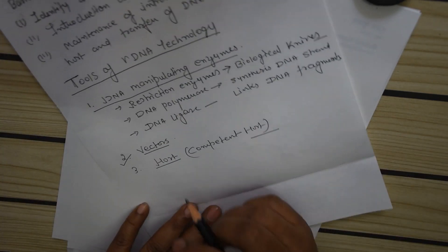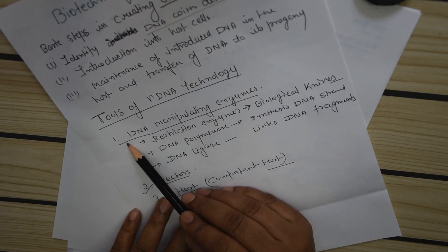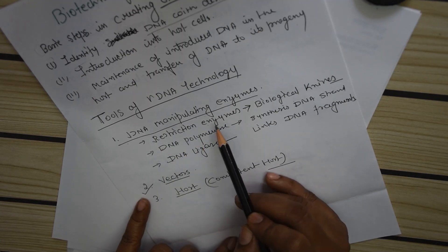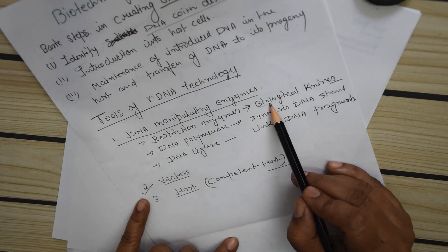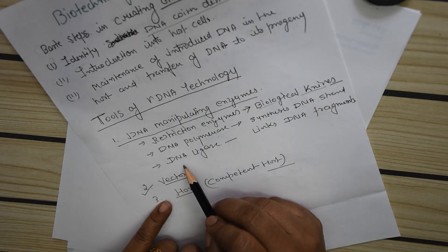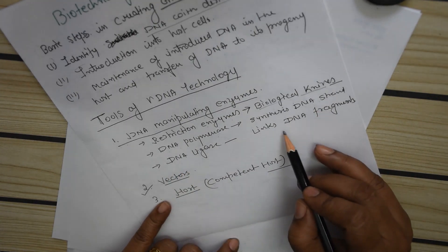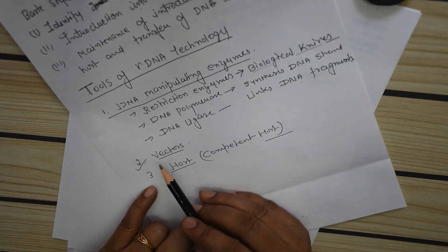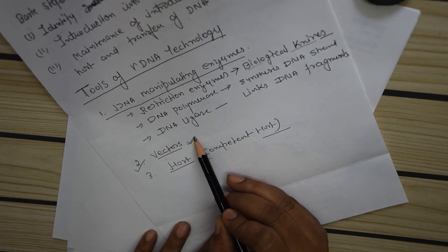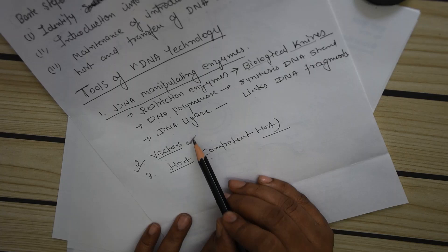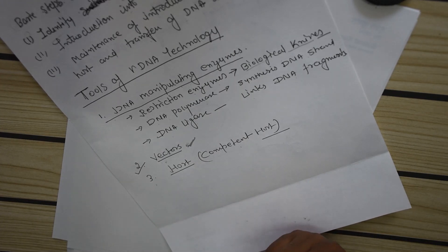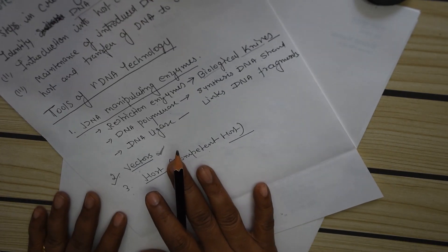For recombinant DNA technology there are certain tools. The first tool is DNA manipulating enzymes. The first one is restriction enzyme, also referred to as biological knives. DNA polymerase helps in the synthesis of a DNA strand. DNA ligase is another enzyme that links the DNA fragments. The second tool is vectors, which we are going to study in this video in detail. The third one is the competent host, into which the desired gene will be transferred.